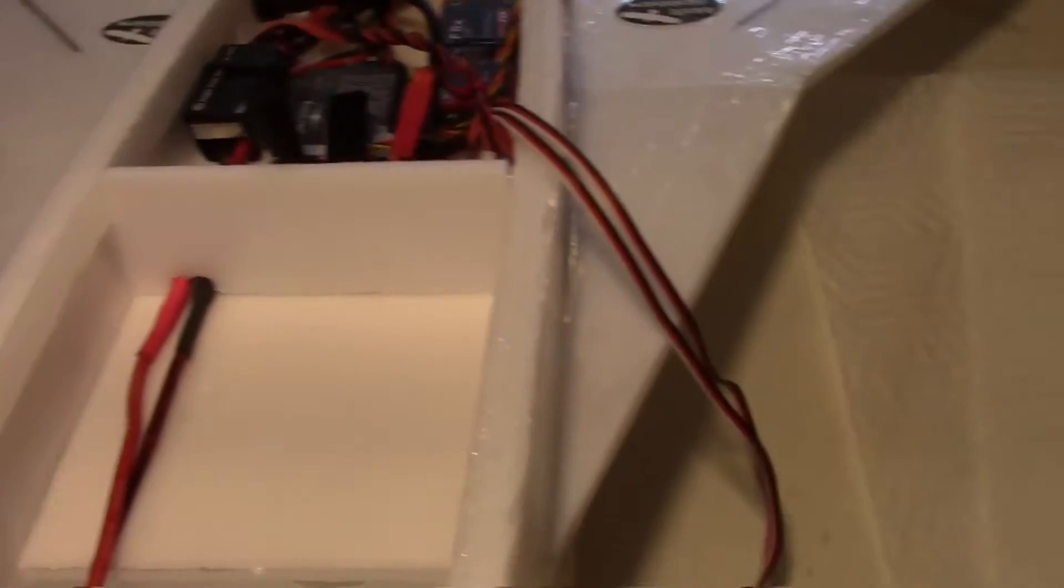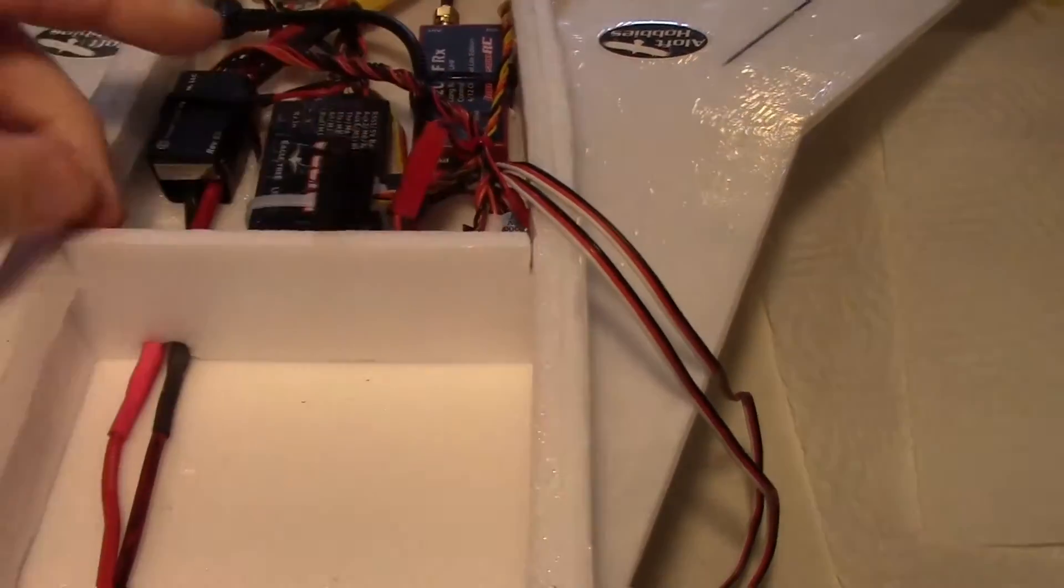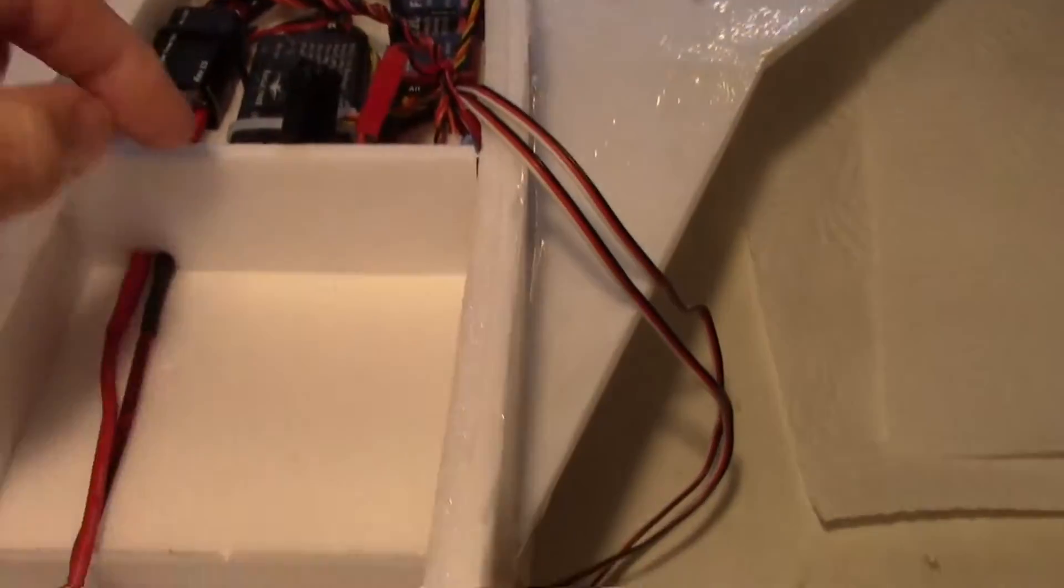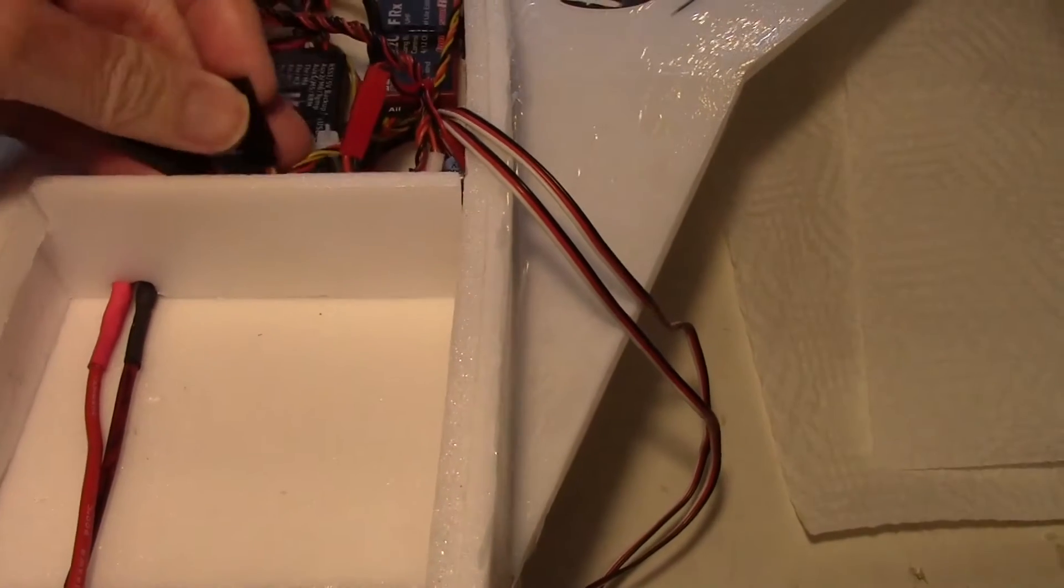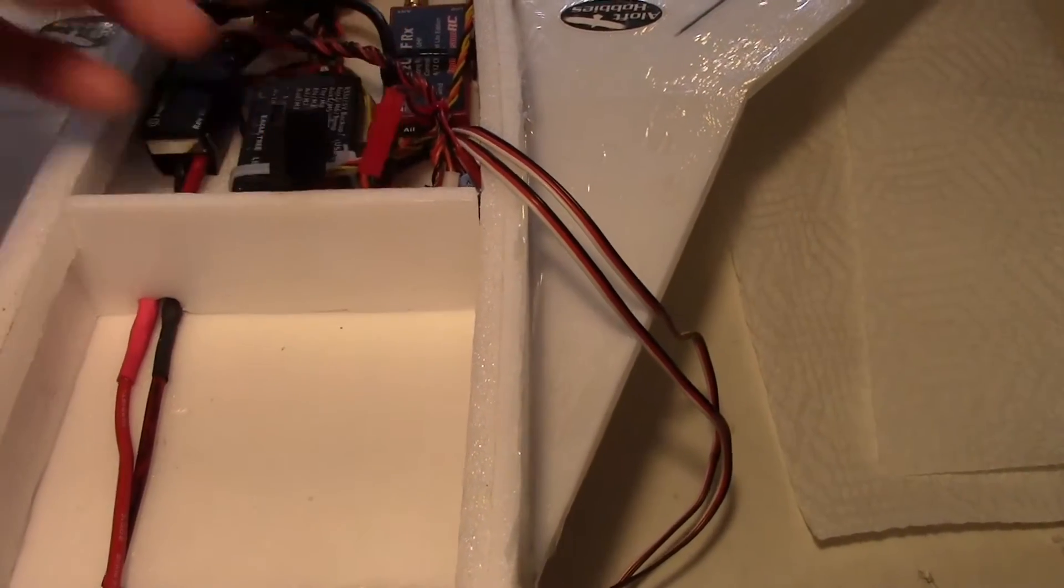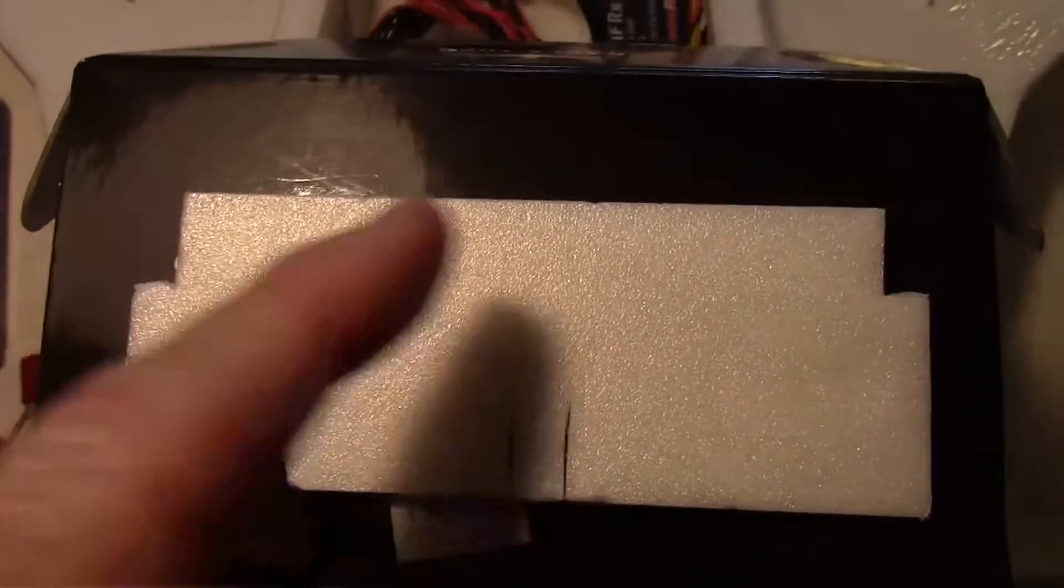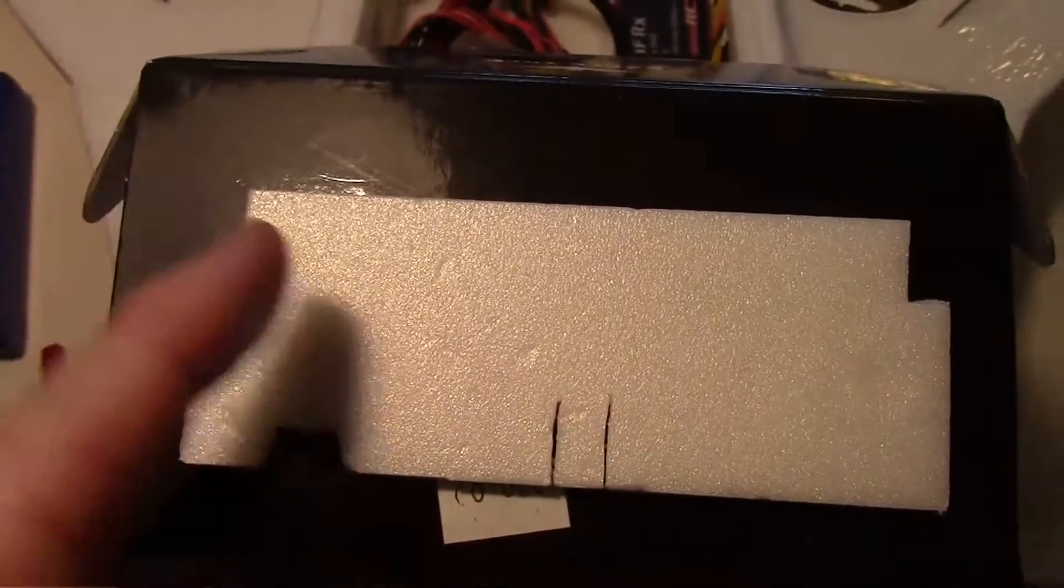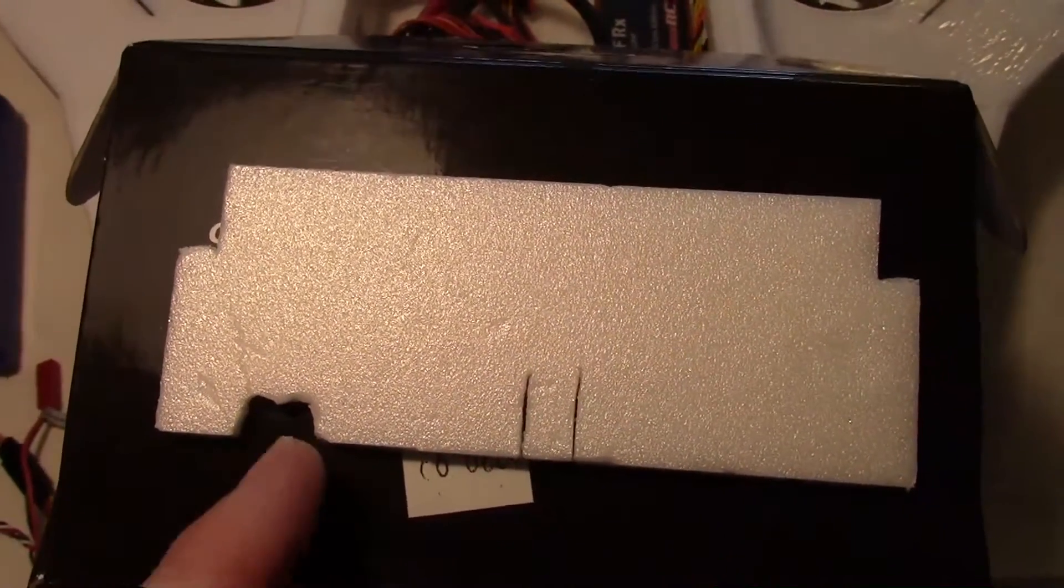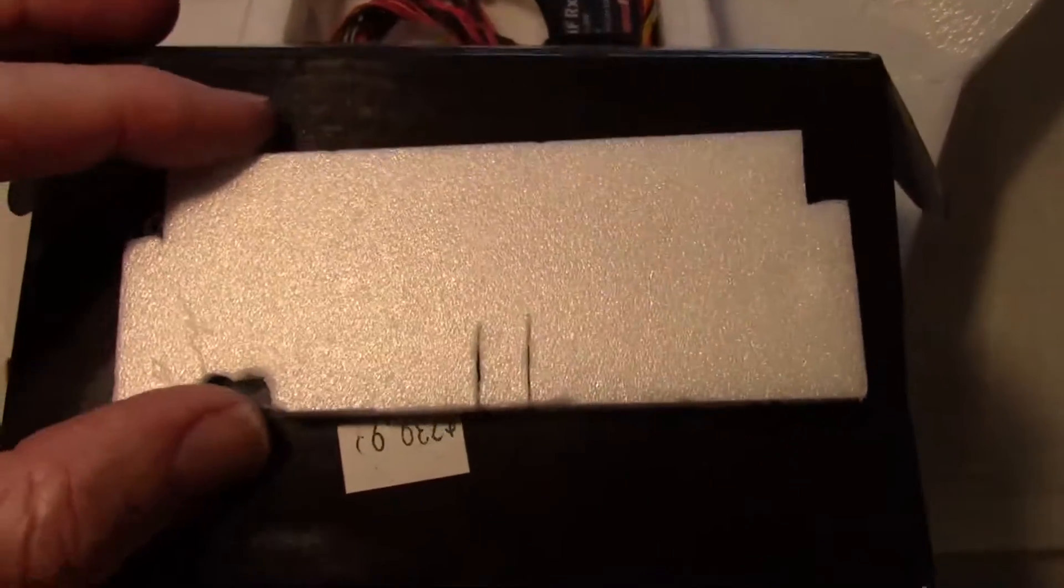So I'm about to put this bulkhead in. And I've already pre-cut it so that the wires for the battery can come through. I may cut some more holes for the video transmitter and camera wires right here. So that's what my bulkhead looks like. Got the notches out for the gunnels and the wires right here for the battery, and the two slots for the video and camera.